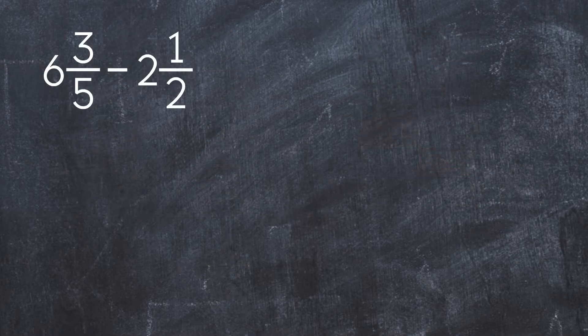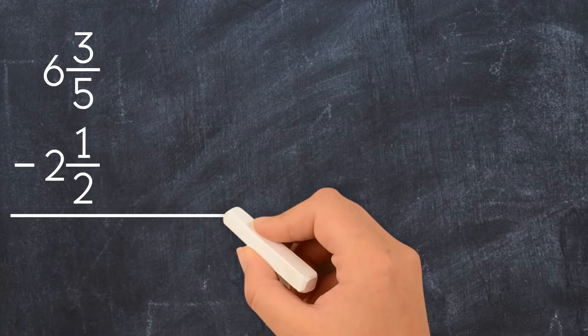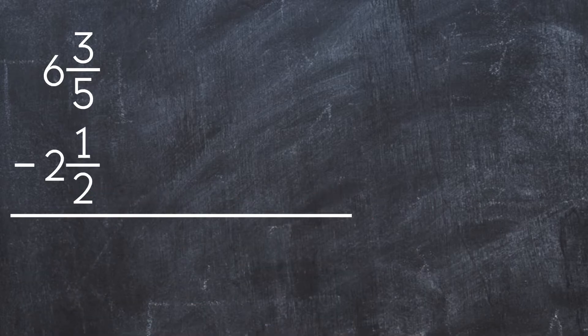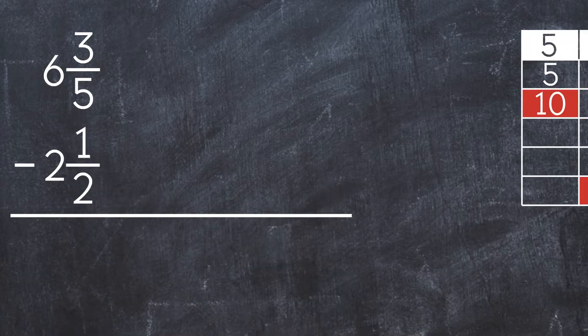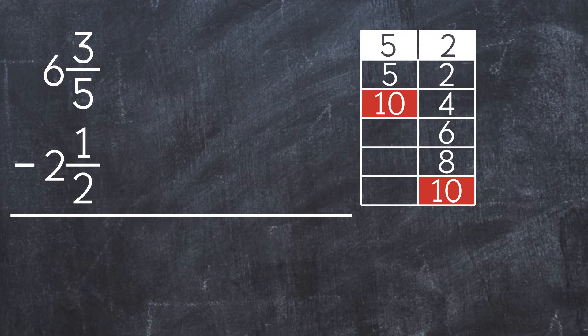Let's do another example: 6 and 3 fifths minus 2 and 1 half. Let's turn it into stacked form. We find the common denominator by finding the least common multiple between 5 and 2. So the common denominator is 10.